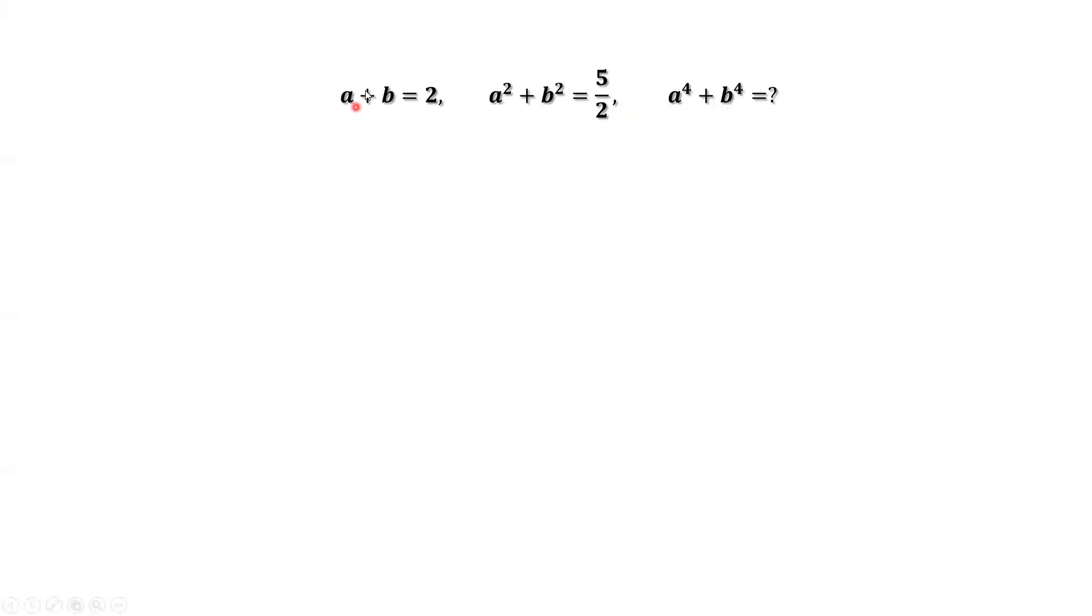We can use the first given condition to derive the result of a times b. First of all, we square both sides of a plus b equals 2. Left hand side equals a squared plus 2ab plus b squared. Right hand side is 4. a squared plus b squared, we have an answer here, that's 5 halves. Replace a squared plus b squared by 5 halves. We solve this equation, we can find ab. a times b equals 3 over 4.